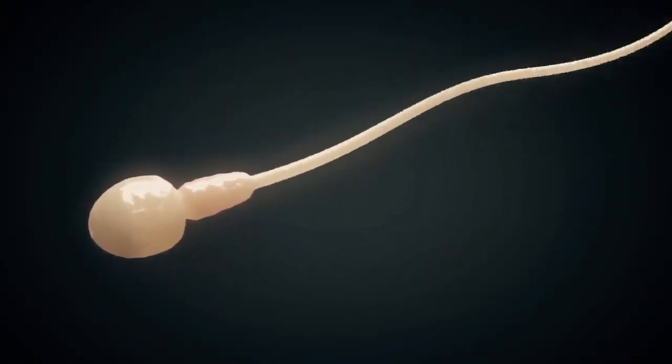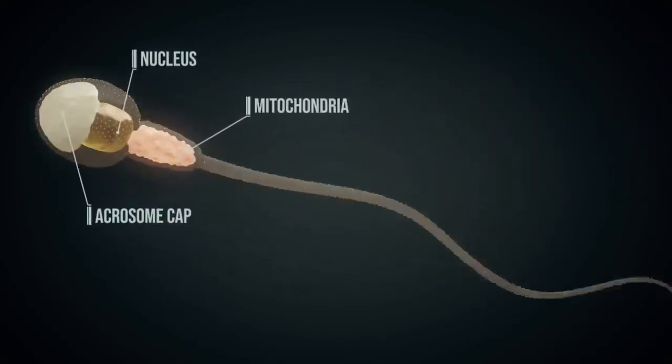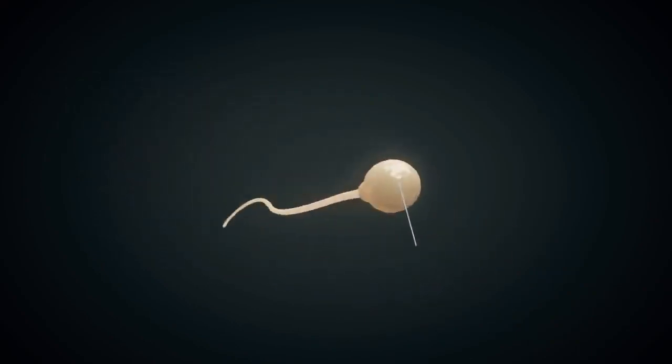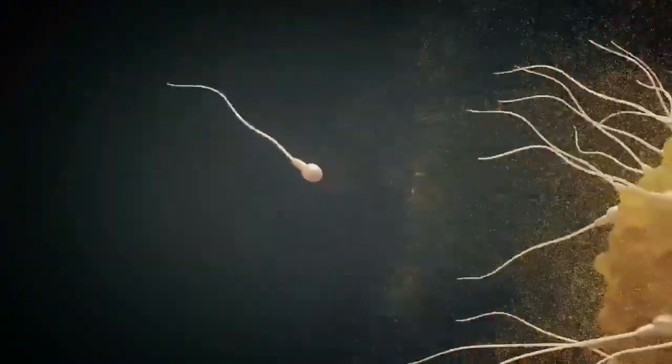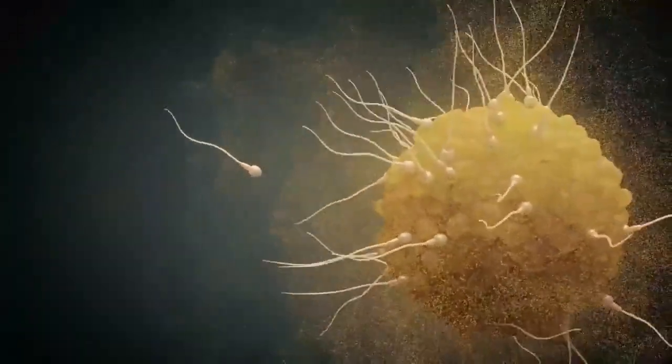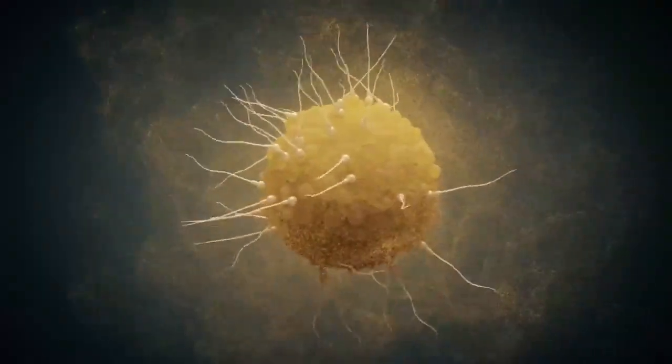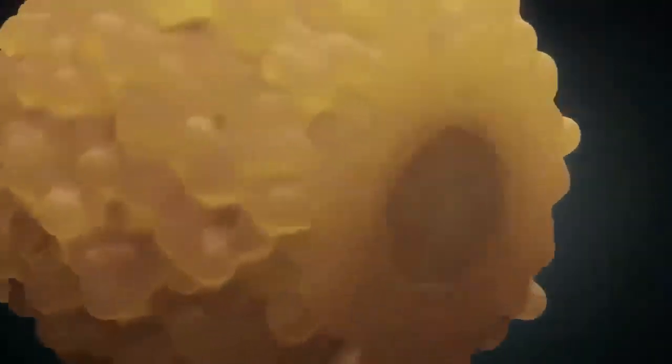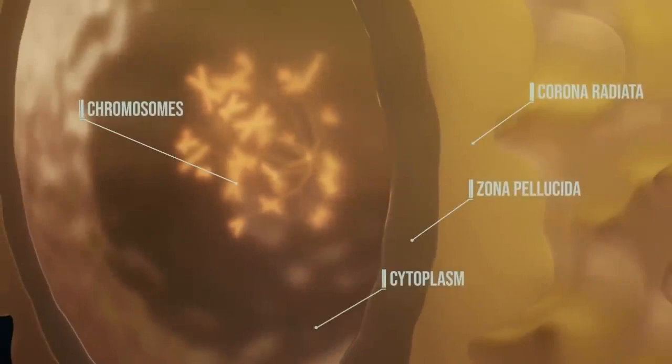A sperm cell's nucleus contains the male's genetic information. Through messenger substances emitted by the egg cell, the remaining sperm cells find their way to the ovum.